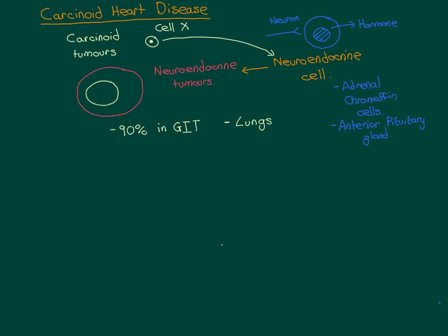Carcinoid tumours can do something beyond the usual horrible things cancer does: because they are neuroendocrine tumours arising from this embryological cell type, they have a tendency to start releasing a huge number of bioactive molecules. In many people — though not all cases — carcinoid tumours start producing a whole bunch of bioactive molecules into the blood.